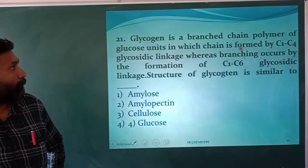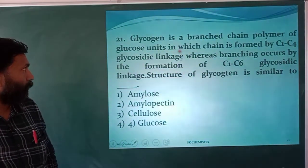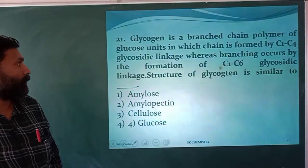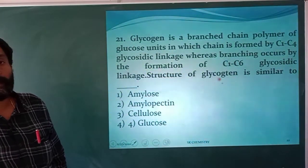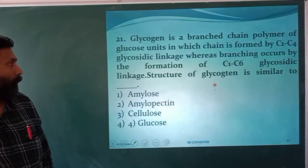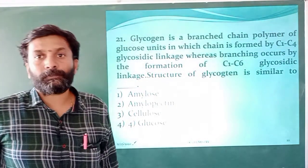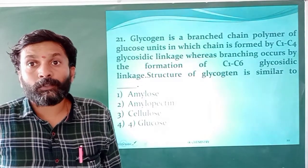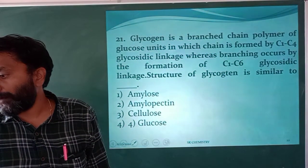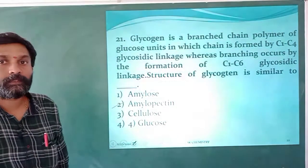Glycogen is a branched chain polymer of glucose units in which the chain is formed by C1–C4 glycosidic linkage, whereas branching occurs by C1–C6 glycosidic linkage. The structure of glycogen is very similar to amylopectin, which is a branched chain polymer. So the answer is amylopectin.